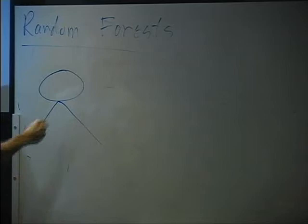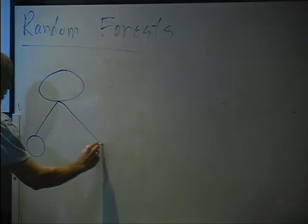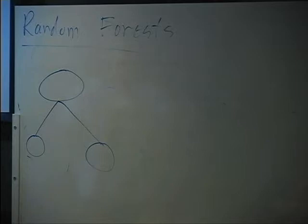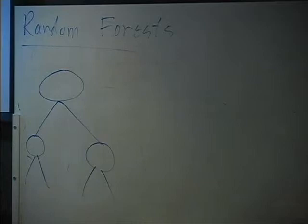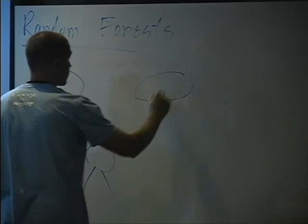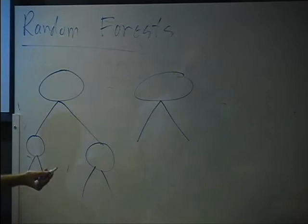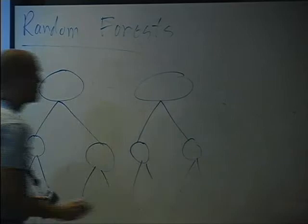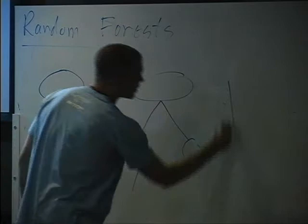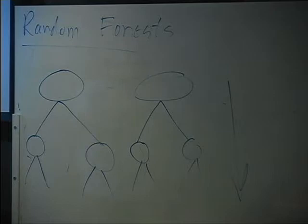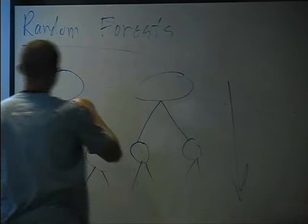You can repeat the process, starting from the same root, sampling 10 different attributes from 60 and finding the best split. All these trees will be somewhat different because the splits aren't optimal — they're somewhat random. They grow these trees in random forests pretty big without much pruning. Each tree gives a guess, and you take the majority vote among all those trees for your prediction.